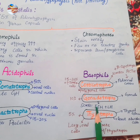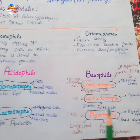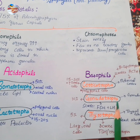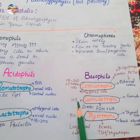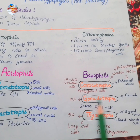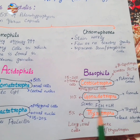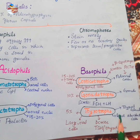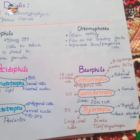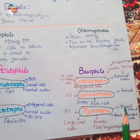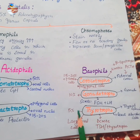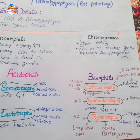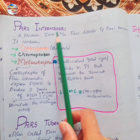Gonadotrophs secrete FSH (follicle stimulating hormone) and LH (luteinizing hormone). These are secreted in both males and females but have different functions in both genders. Gonadotrophs form about 10% of the total cells in pars distalis, and their target organs are the gonads. Thyrotrophs release thyroid stimulating hormone; they are the least abundant cells, forming only 5% of cells in pars distalis. Their cells are large and oval shaped.